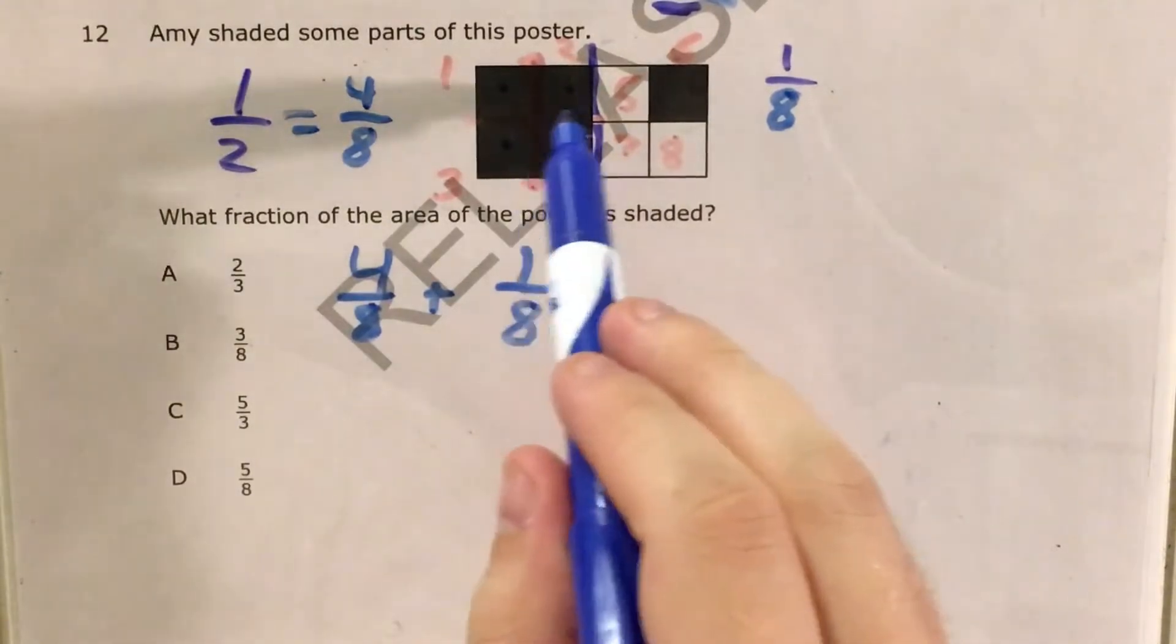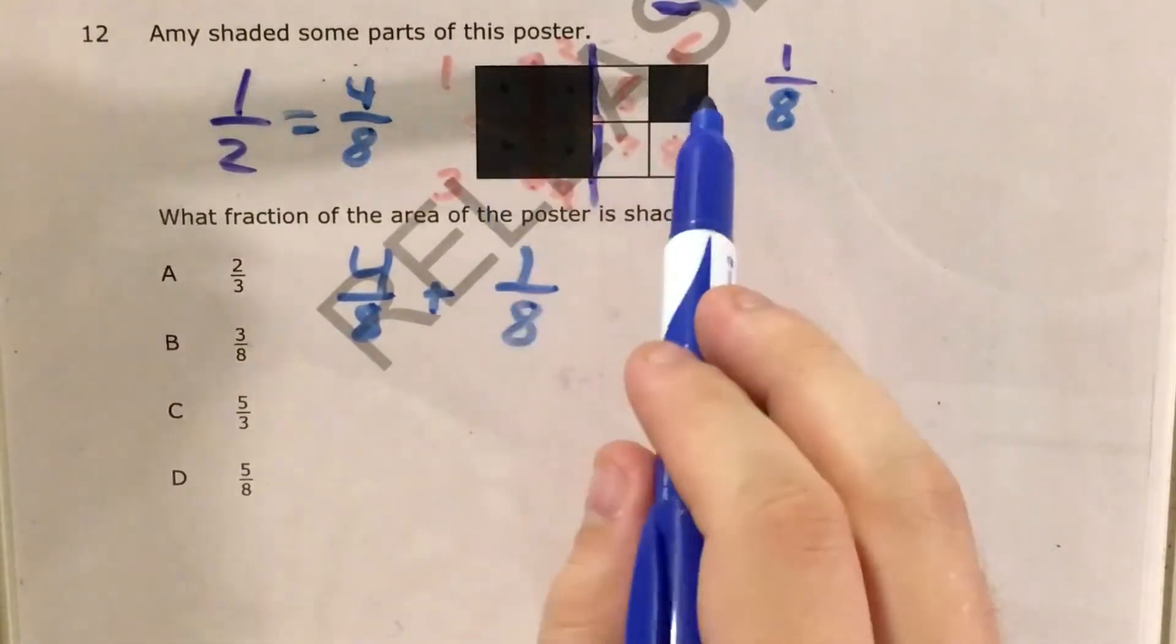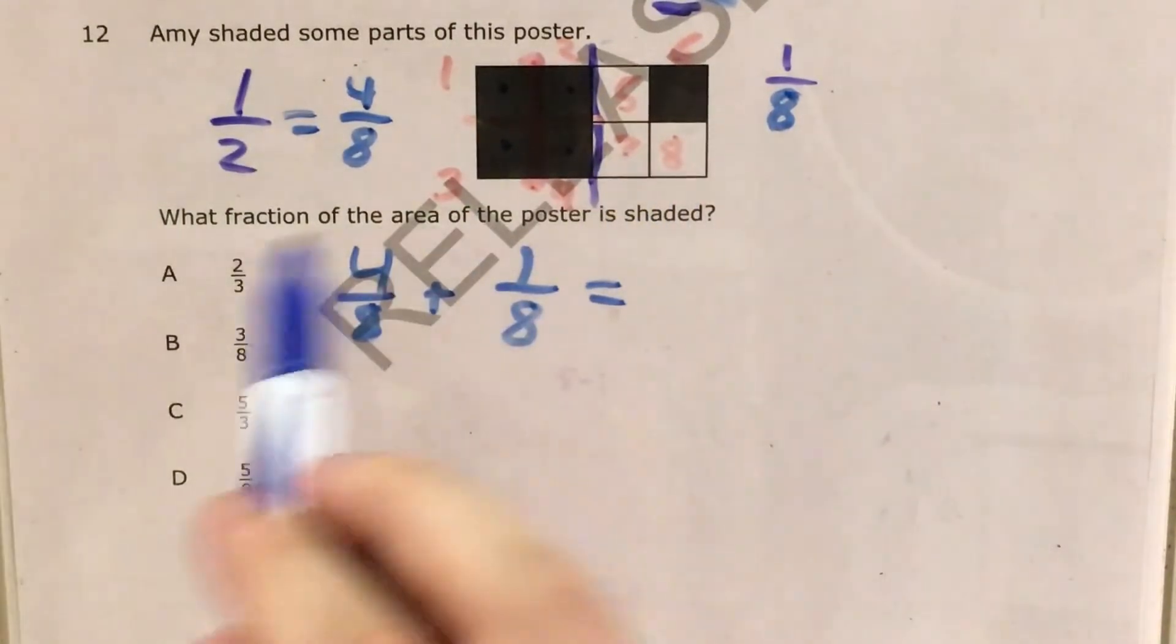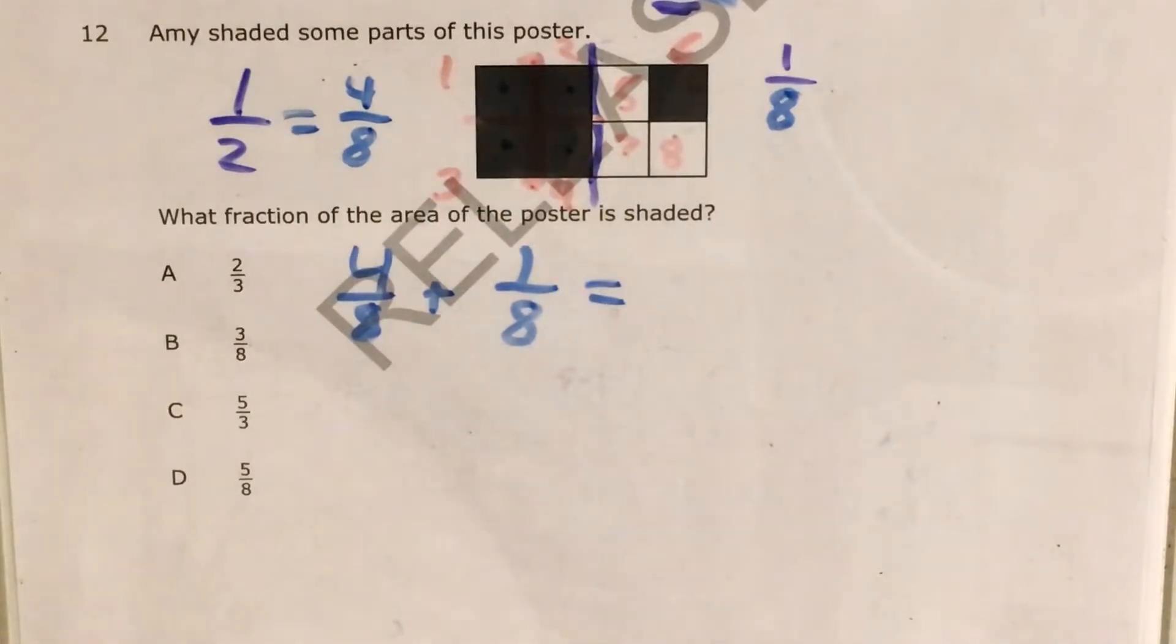I can add four eighths to one eighth. These four parts plus this one part and that is gonna give me the total area of the poster that's been shaded. And now whenever I add two fractions like this that have the same denominator, I'm actually gonna think about this like I'm adding four inches plus one inch.